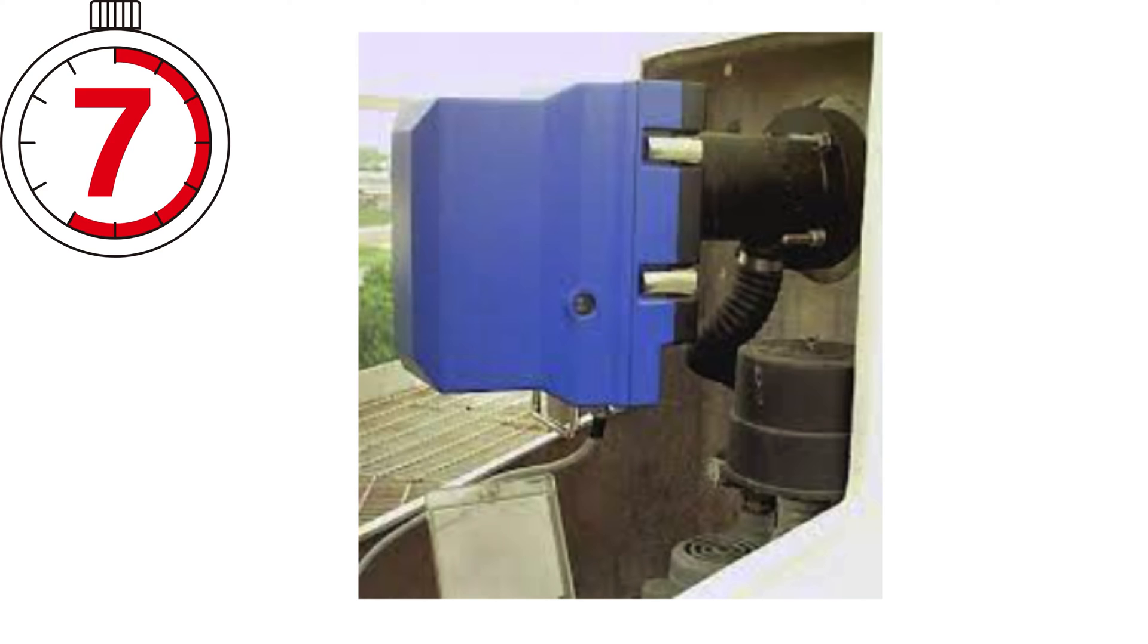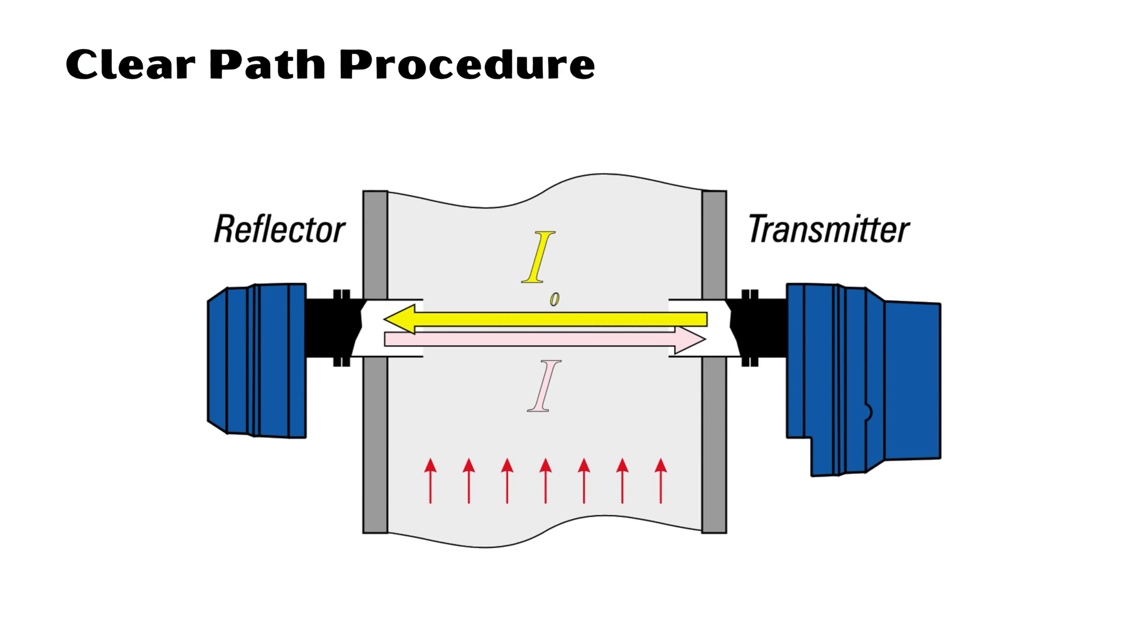Clear path procedure: In this procedure the measuring zero is set. The transceiver and reflector are mounted to the exact distance as on the stack or duct in a clean room with minimum dust in the air, such as an air-conditioned office. This procedure then adjusts the monitor so that a zero percent opacity reading is obtained. This procedure should be done in the factory and normally will not be done in the field.